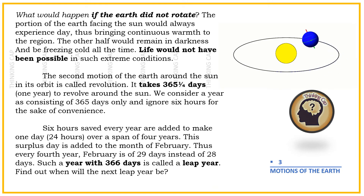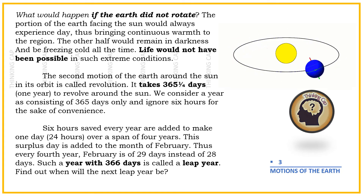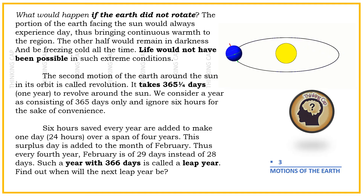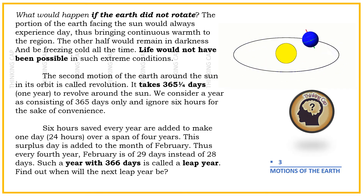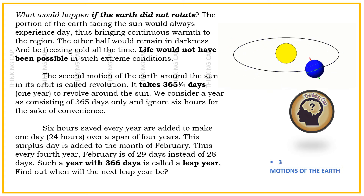What would happen if the Earth did not rotate? The portion of the Earth facing the Sun would always experience day, thus bringing continuous warmth to the region. The other half would remain in darkness and be freezing cold all the time. Life would not have been possible in such extreme conditions.